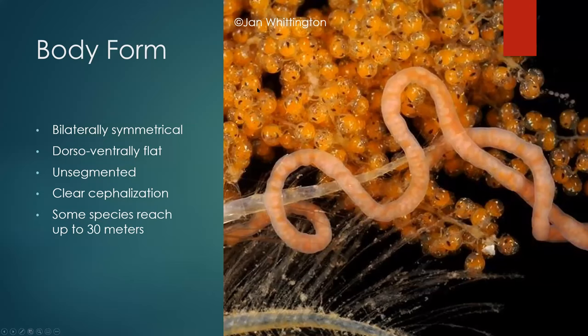These animals exhibit bilateral symmetry. They are dorso-ventrally flattened most of the time, but there are some species that appear tube-like. They are unsegmented — a characteristic that helps distinguish them from flatworms, the Platyhelminthes. They do have a cephalized region, usually distinguished by the mouth and/or proboscis openings. They can also be very variable in size: some are as small as two millimeters, and the largest ones can reach up to 30 meters.